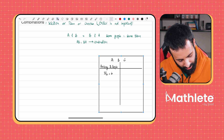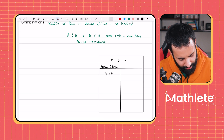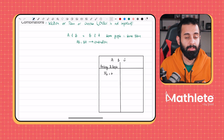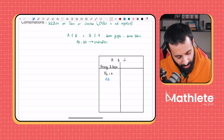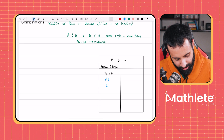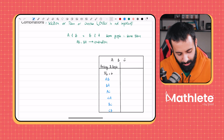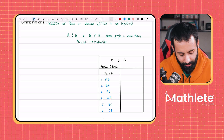Since 6 is not a large number, let's write all six possibilities. You can use your calculator to work out 3P2, which is simply 3 times 2. The six possible arrangements of two people from three are: AB, BA, AC, CA, BC, and CB. You can count and see that we have six different ways to arrange two people out of three.